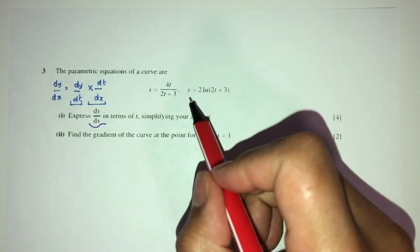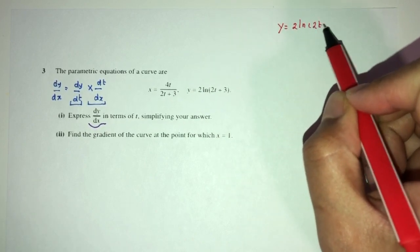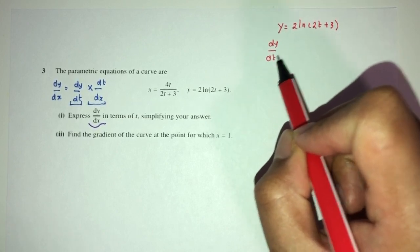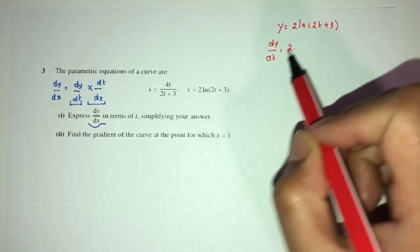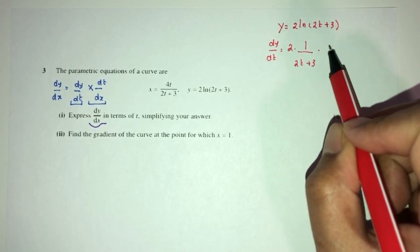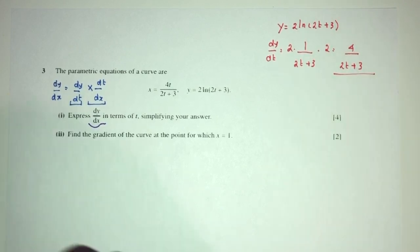So one by one, here we have y is equal to 2 ln(2t + 3). So dy/dt will be what? That will be 2 is only a multiple, we don't care. That will be 1 over (2t + 3) times 2. That will be 4 over (2t + 3). For this one.